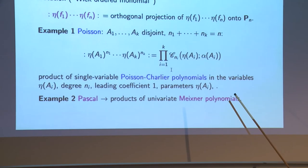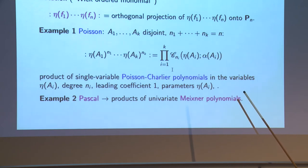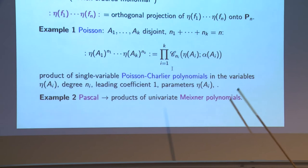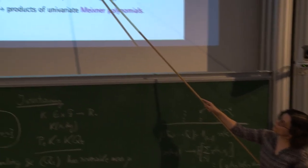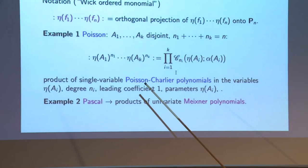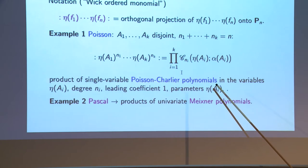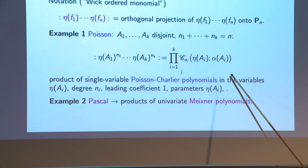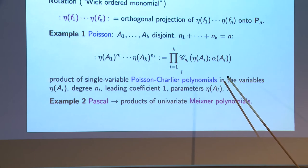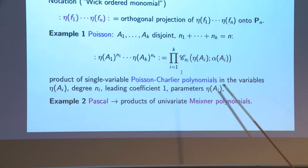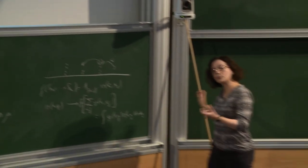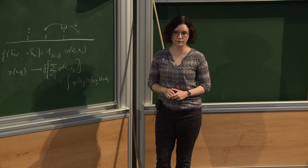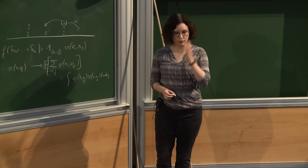When test functions are chosen as indicators of disjoint regions, the orthogonalized version of the product of occupation number powers is simply a product of one-variable orthogonal polynomials. For the Poisson case these are Poisson-Charlier polynomials — discrete orthogonal polynomials orthogonal with respect to the Poisson distribution, with the intensity measure of the region as parameter. For the Pascal/inclusion case you use Meixner polynomials instead. This is the formula that makes the link with single-site products on the lattice and is the generalization.